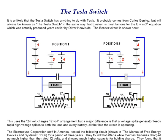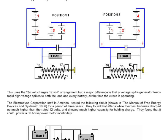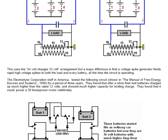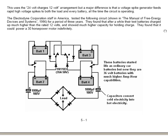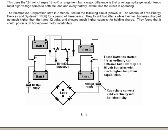The system used is often referred to as the 24-volt charges 12-volt arrangement. But a major difference is that the spike generator feeds a rapid, high-voltage train of spikes to both the load and every battery, all the time that the circuit is operating.